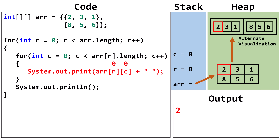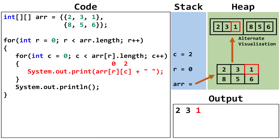We output arr row 0, column 0, which contains 2. Increment c to 1. c is less than 3, so we continue. We output arr row 0, column 1, which contains 3. Increment c to 2. c is less than 3, so we continue. We output arr row 0, column 2, which contains 1. Increment c to 3. c is not less than 3, so we terminate the inner loop. We output a new line. Increment r to 1. r is less than 2, so we continue.